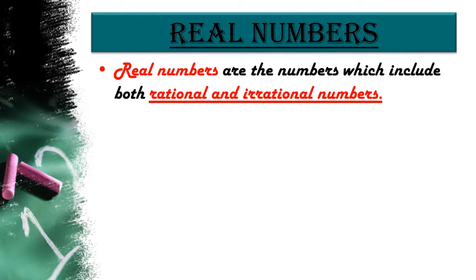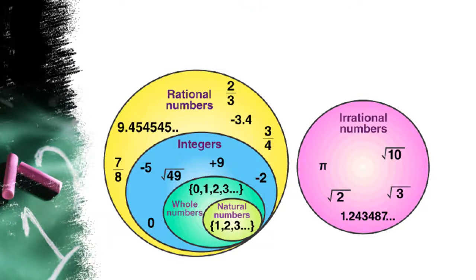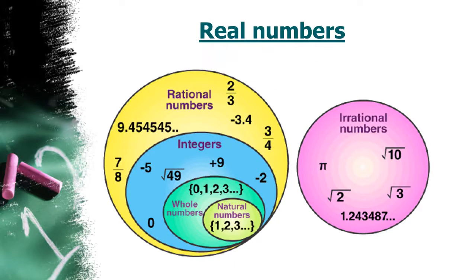Next we have real numbers. Real numbers include both rational and irrational numbers — that is, fractional and non-fractional numbers. Rational numbers such as integers (-2, 0, 1), fractions (1/2, 2.5), and irrational numbers such as root 3, pi, and 22/7 are all real numbers. The combination of rational and irrational numbers together is called a real number.